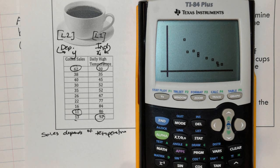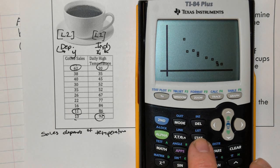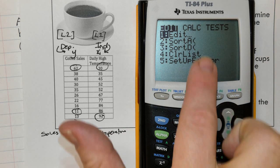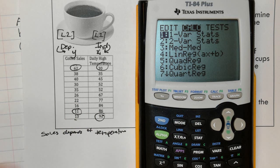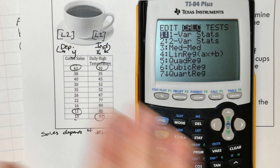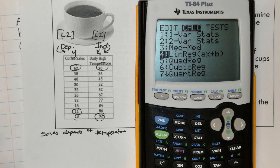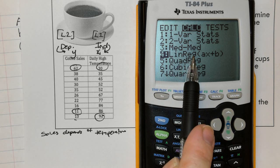Now we're going to find the application that does that. Go back to stat where we entered all the points, and I'm going to use the arrow to go over to calculate. We know we're working with linear regression right now. This entire unit is on linear functions. Go down to number 4. This stands for linear regression.